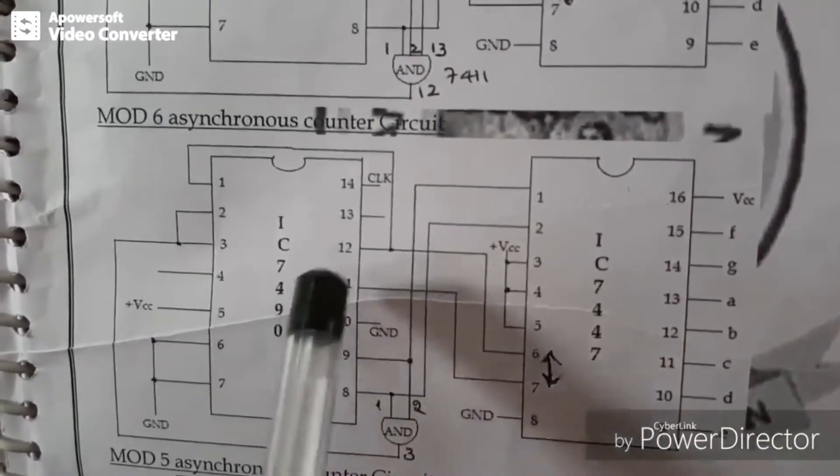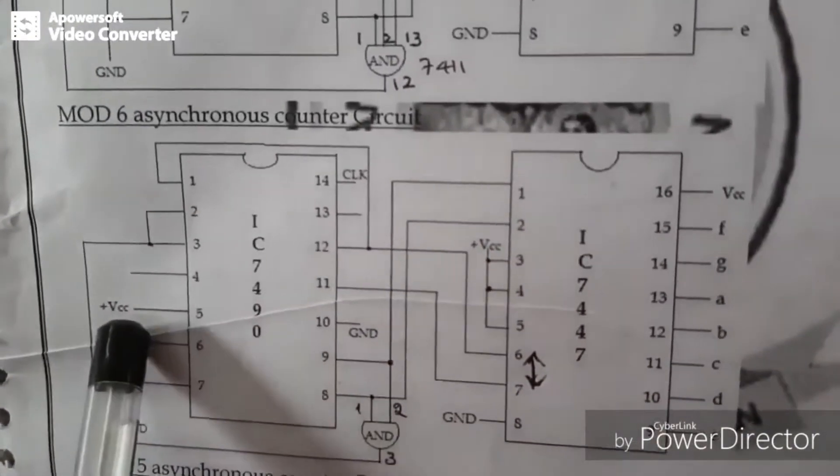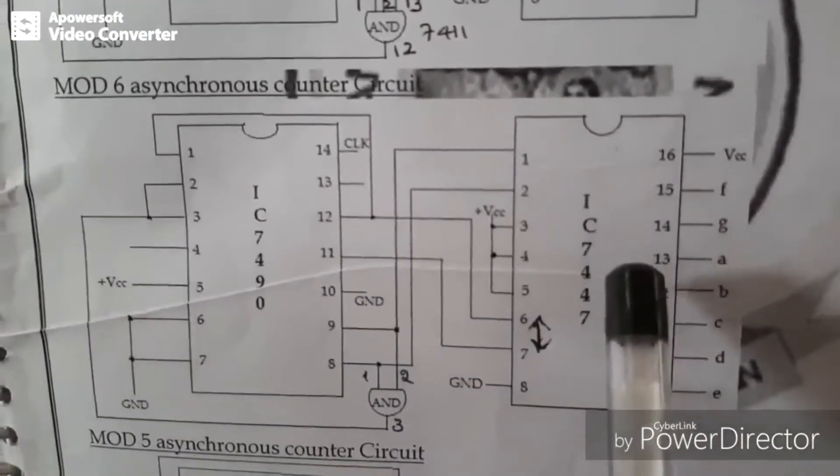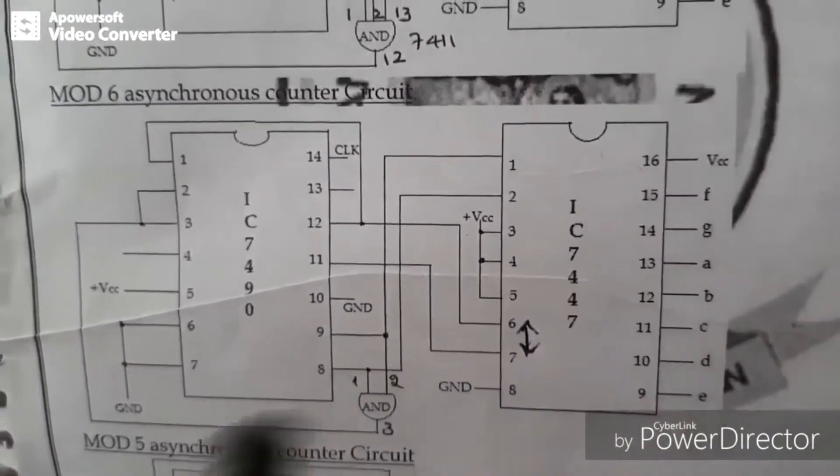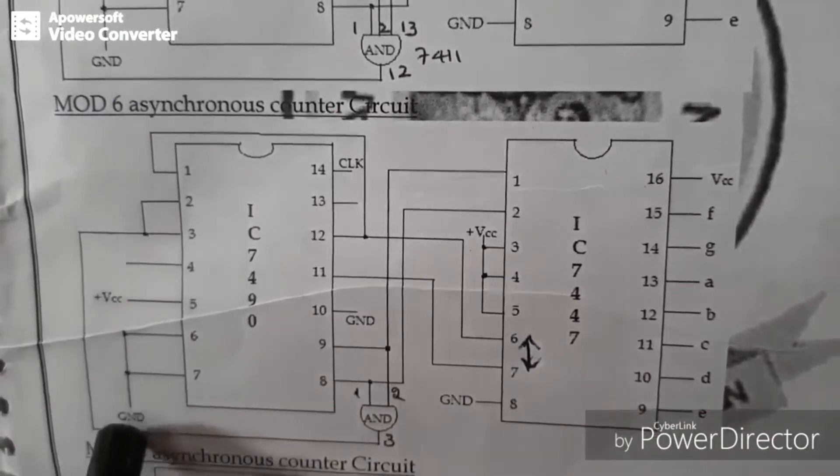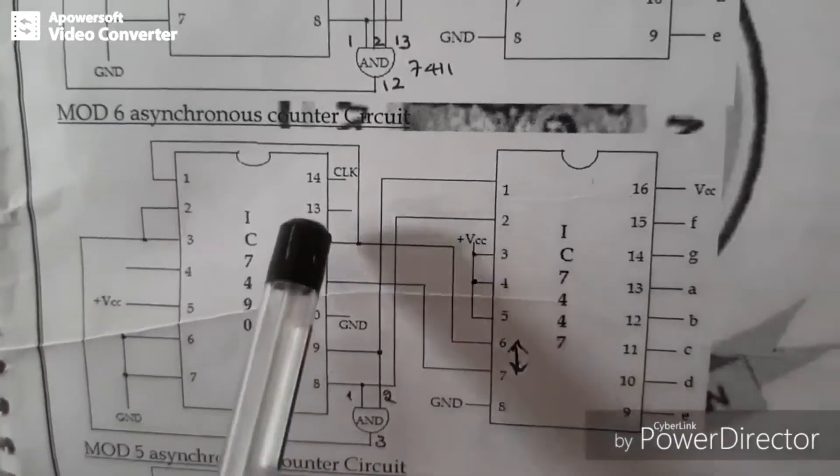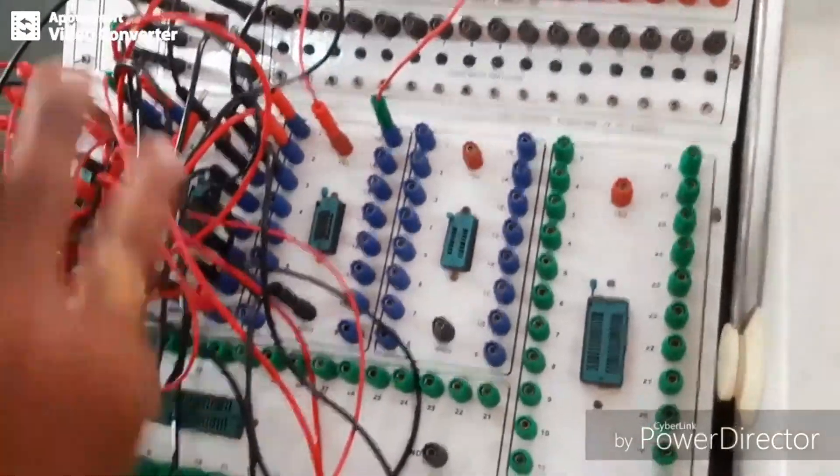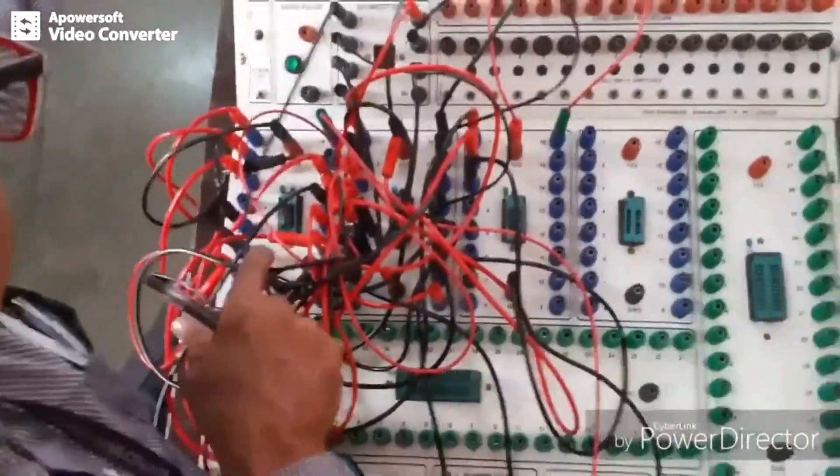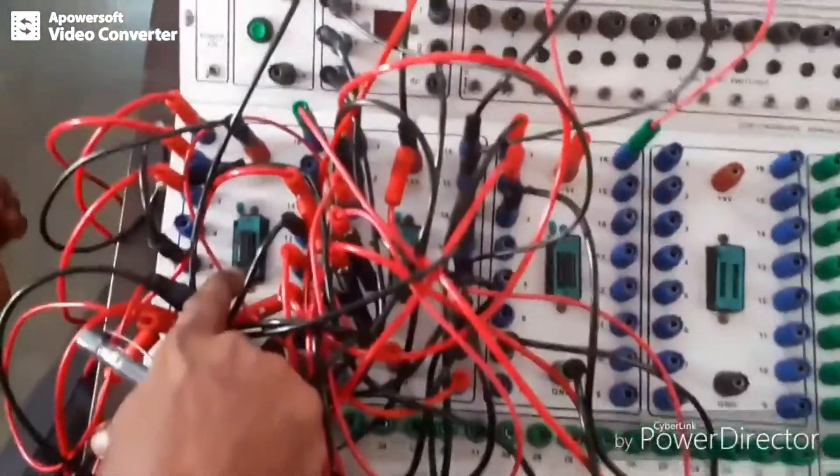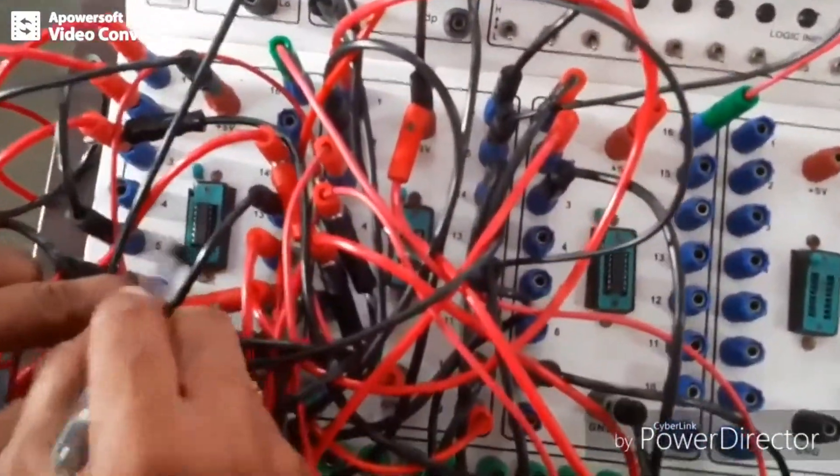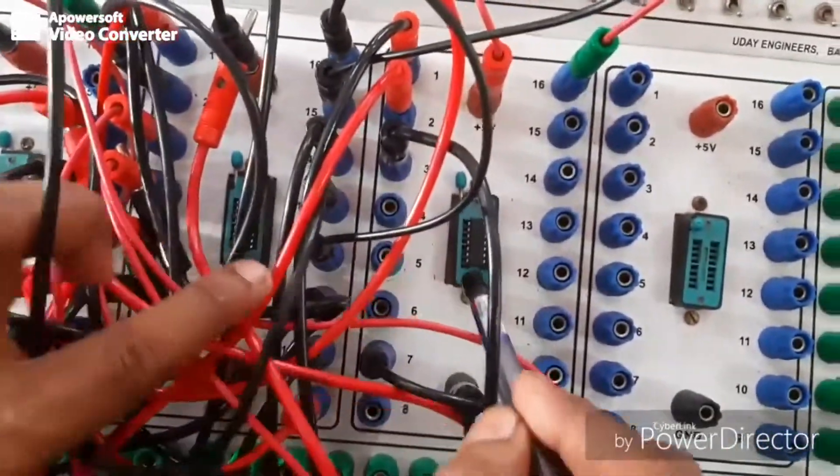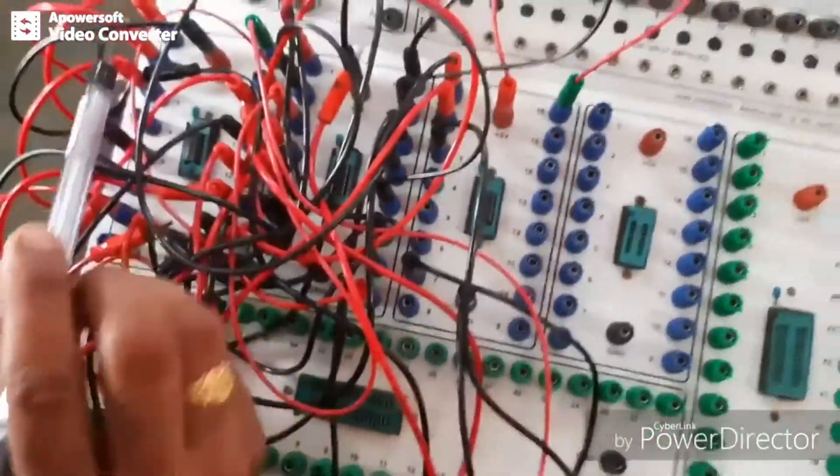For example, in IC 7490, pin 5 is connected to VCC and pin 10 is connected to ground. Then in IC 7447, pin 8 is ground and pin 16 is VCC. Other than that, here pins 6 and 7 you have to short and connect to ground, and pin 14 is a clock. For example, this is 7490 and this one is 7447 and this one is 7408. First you need to connect VCC and ground.